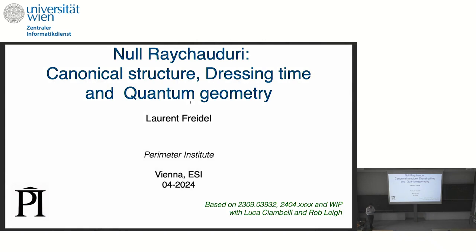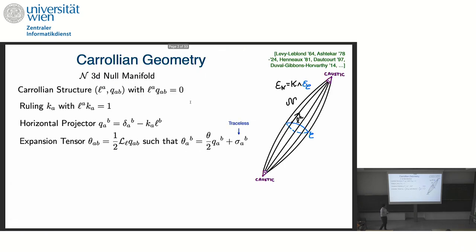It's a pleasure to be in this beautiful city. Thanks to the organizer for the invitation. I want to talk about null ratio theory, maybe quantum null ratio theory, a bit of quantum geometry. This is work published but also in progress with Luca Chambeli and Robley. The beginning is really what we have been doing in the past years — all collections of people and big communities understanding much better what is the geometry of null surfaces and the canonical structure along null surfaces. That allows us to revisit the old idea of the membrane paradigm: that somehow gravity projects itself onto a fluid theory on null surfaces.